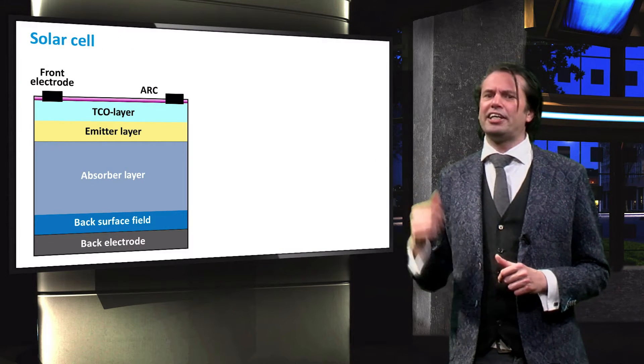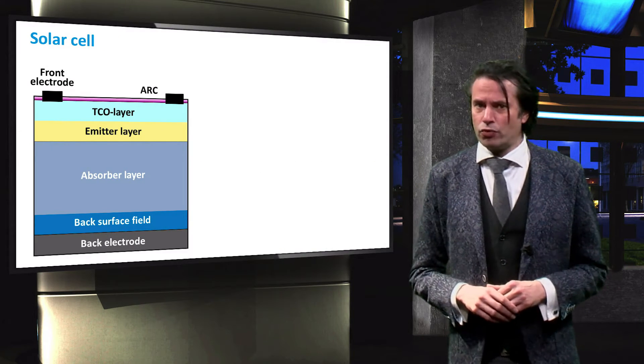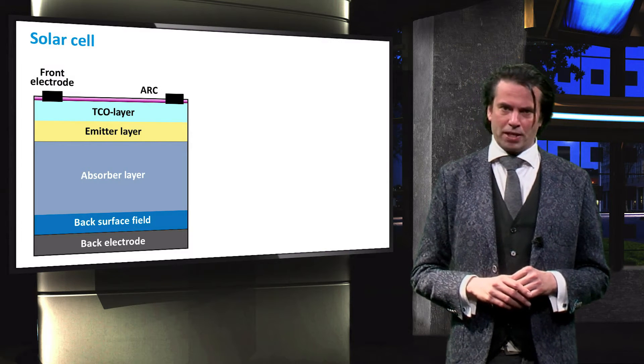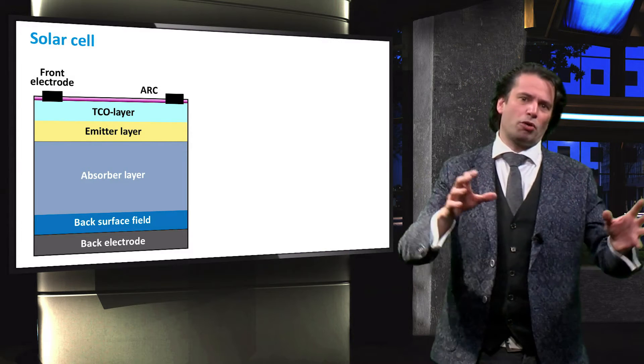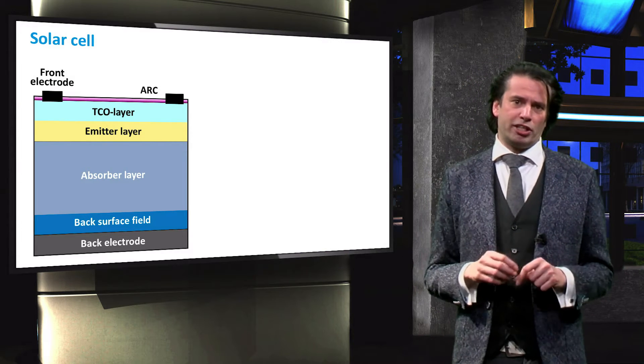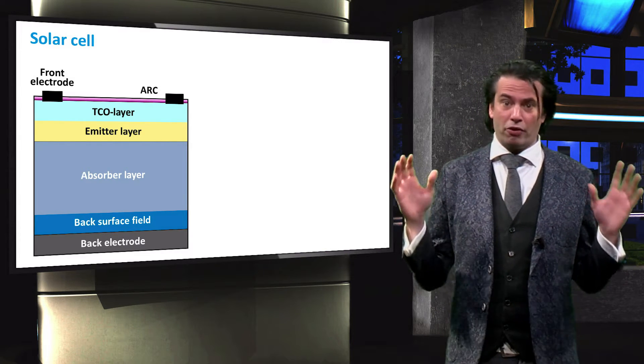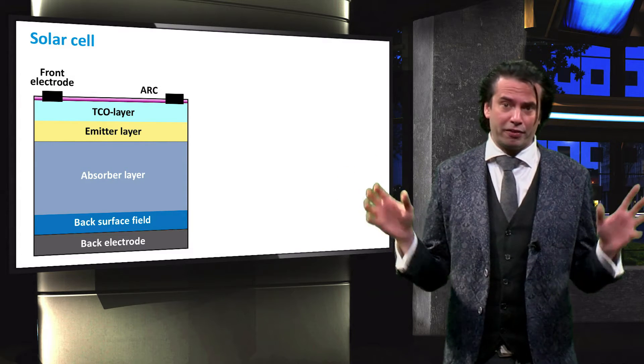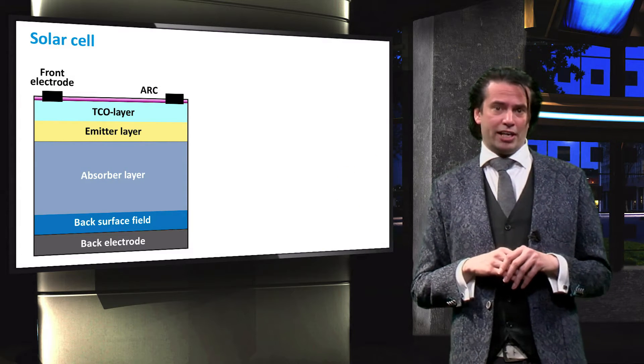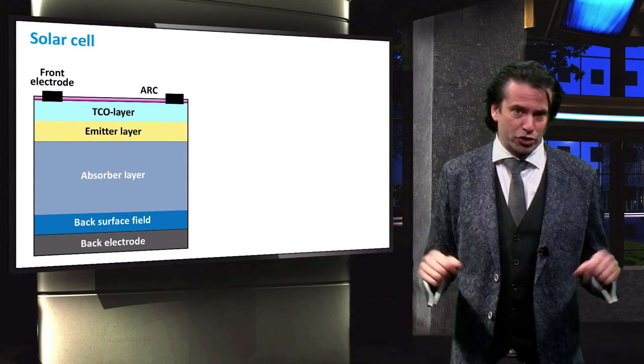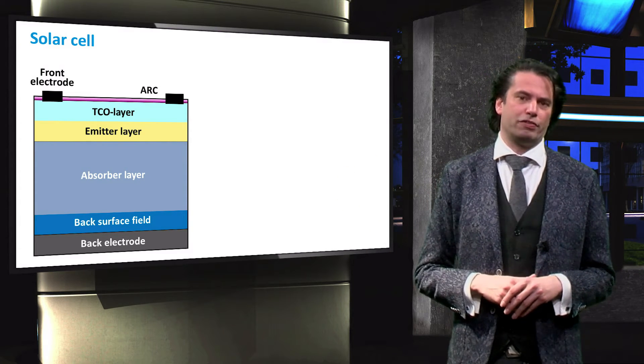Shown here is a standard silicon wafer based solar cell. These are the most common type of solar cells, accounting for about 93% of the total production in 2015.